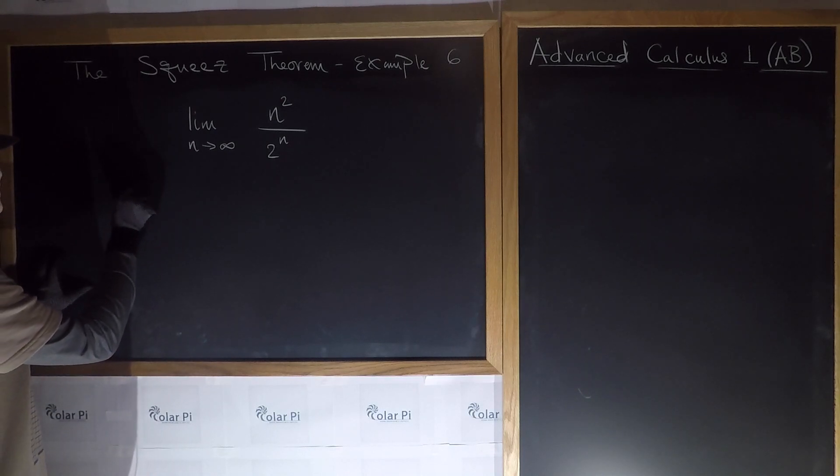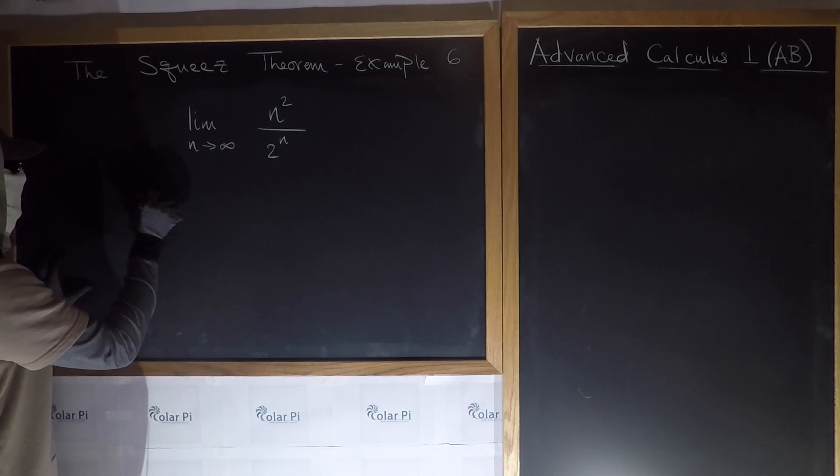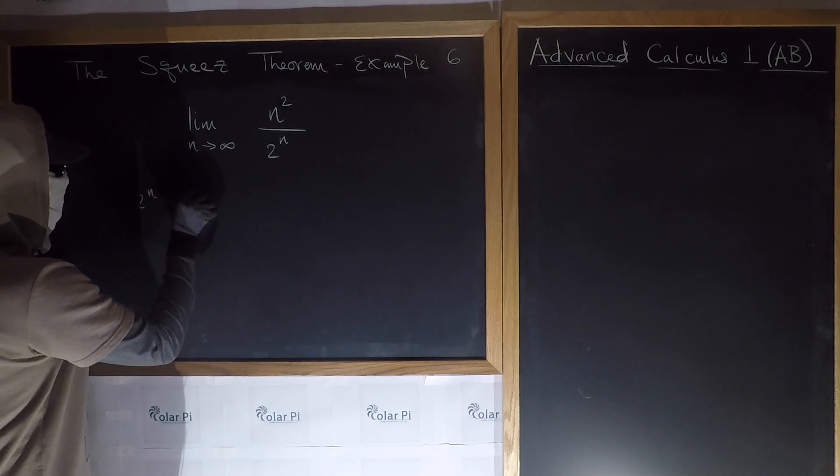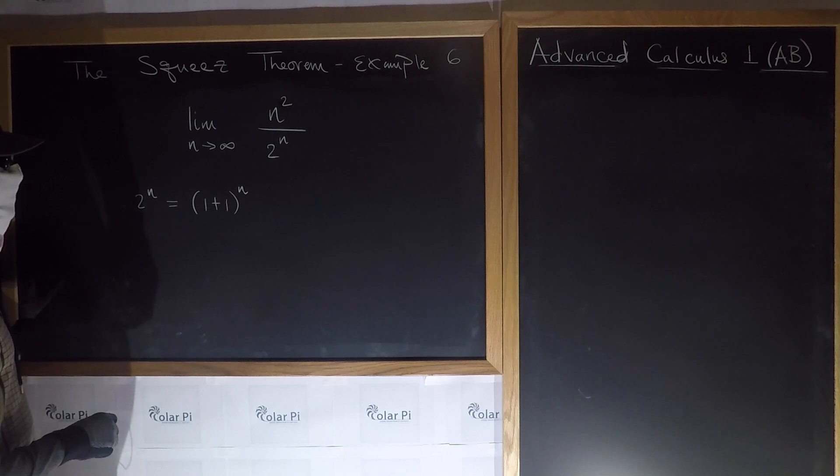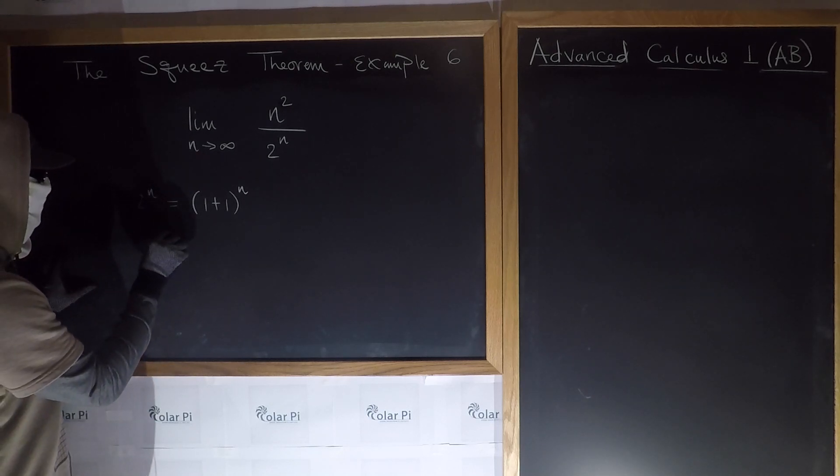the first thing that we're going to do is show that 2 to the n, right, 2 to the n, is equal to, first, 1 plus 1 to the n power, right? And then using the binomial expansion formula, or the binomial theorem,